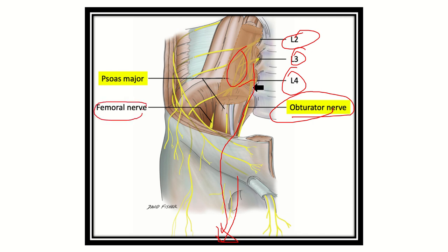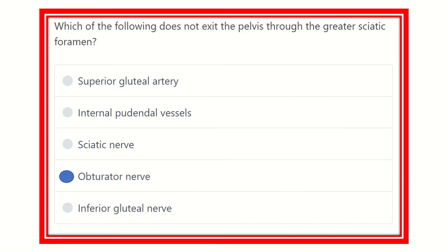The femoral nerve is also derived from the dorsal divisions of lumbar 2, lumbar 3, and lumbar 4. It also travels anteriorly and reaches the anterior aspect of the thigh, so it is also not located in the greater sciatic foramen.